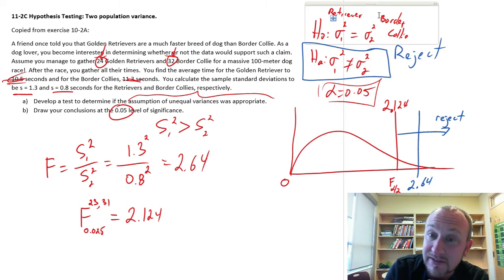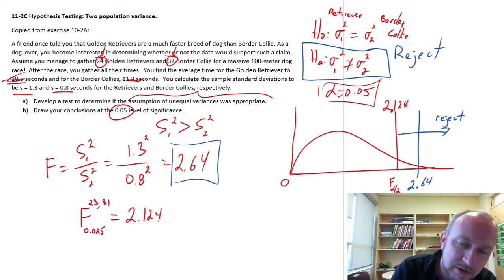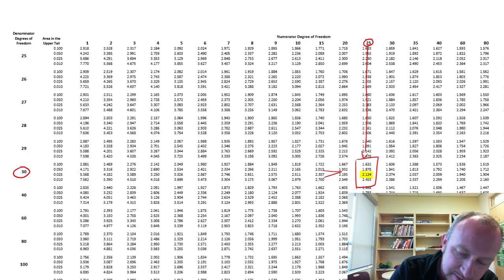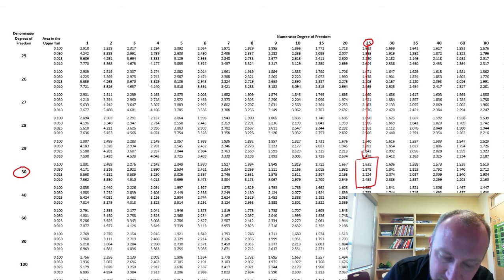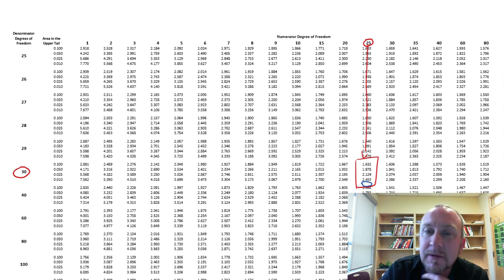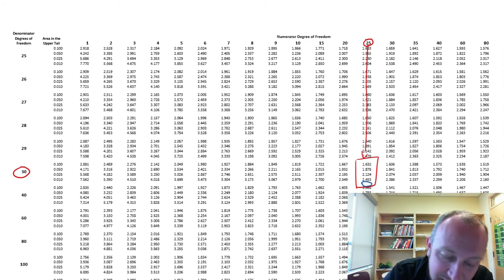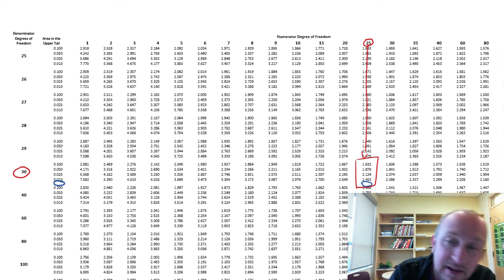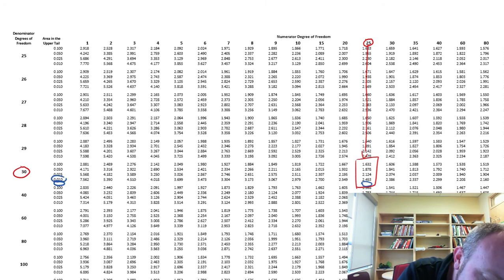Let's quickly do a p-value approach just for practice. So we'll look for our test statistic 2.64. Let me clean this up a little bit. So 2.64. Well, 2.64, it's larger than the largest value in that set of four. So if our test statistic is larger than the largest value, that means that our probability is smaller than the smallest value.